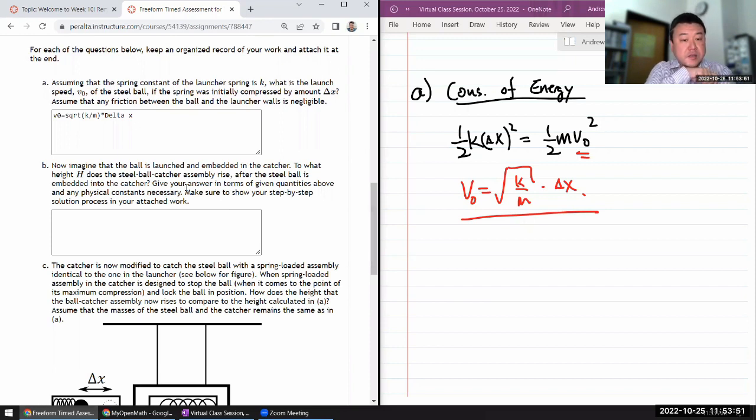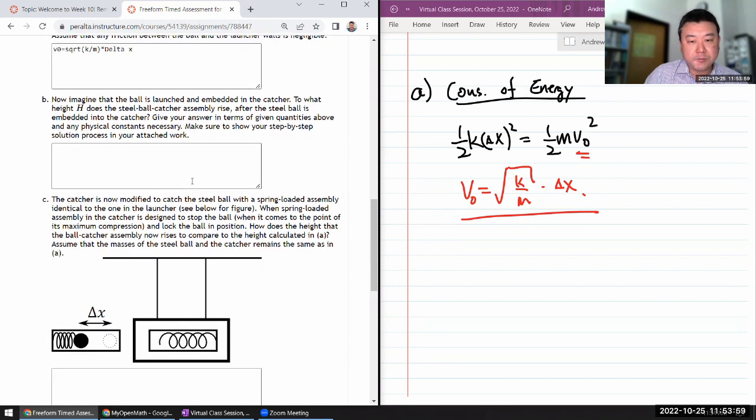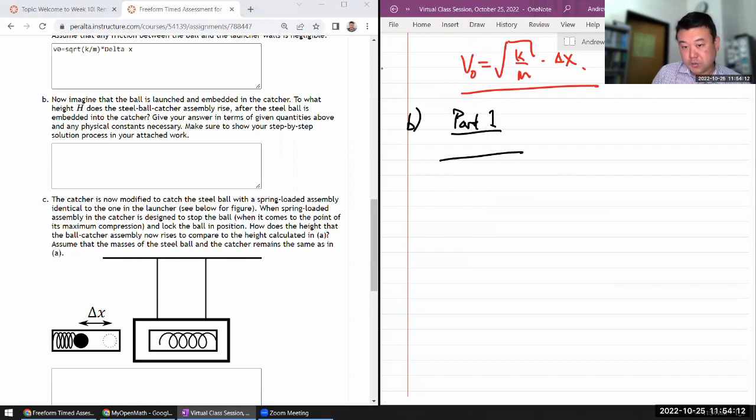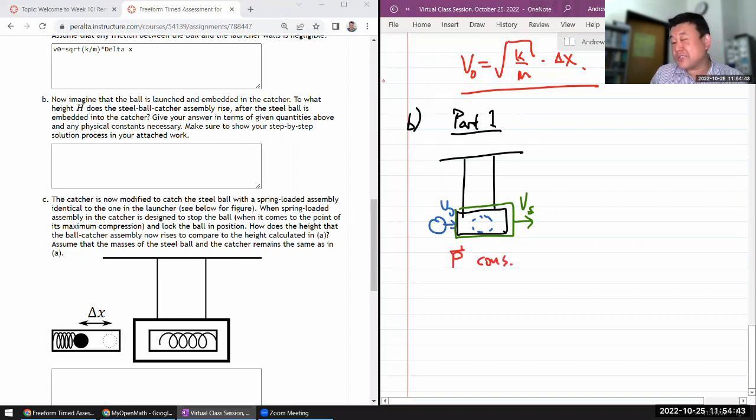If we imagine that the ball is launched and embedded in the catcher, to what height H does the steel ball catcher assembly rise? This is the thing that you have to be careful about, and it's the subject of your pre-lab for Wednesday's lab. You have to treat this interaction in two parts. So there's part one, which will be the collision. You have the catcher that sees the ball coming in with some speed V-naught that we calculated above, and this is going to get embedded. Once it's all embedded they're going to be moving together at some speed, let me call it V-final. In this interaction we can say that the momentum is conserved, and energy is not conserved because it's a sticking collision, it's a totally inelastic collision.